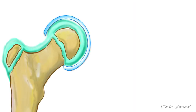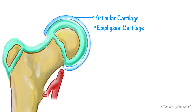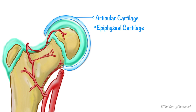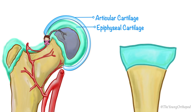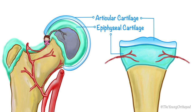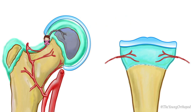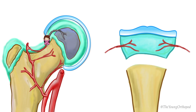When articular cartilage and the epiphyseal cartilage are continuous, the epiphyseal arteries pierce the epiphyseal cartilage and supply the epiphysis. If these arteries are damaged in epiphyseal separation, avascular necrosis of the epiphysis may occur. In other bones where the articular cartilage is not continuous with the epiphyseal cartilage, the epiphyseal arteries enter the epiphysis without piercing the growth plate. In these cases, epiphyseal separation will not cause avascular necrosis.